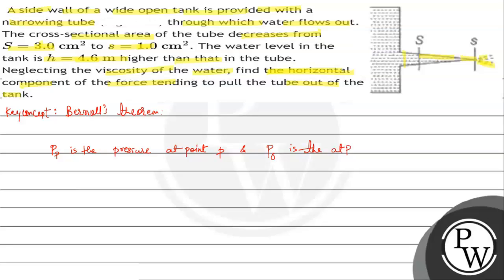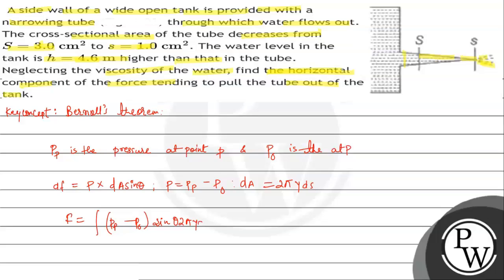The differential force on the nozzle is dF = p · dA · sinθ, where p = P_gauge = P_p − P0, and dA = 2πy · ds. So the total force F is obtained by integrating (P_p − P0) · sinθ · 2πy · ds.